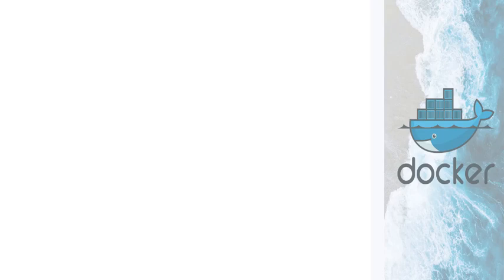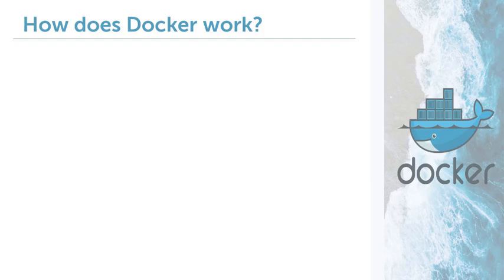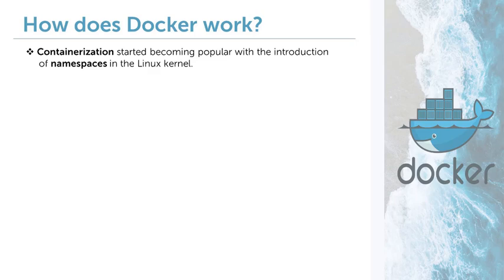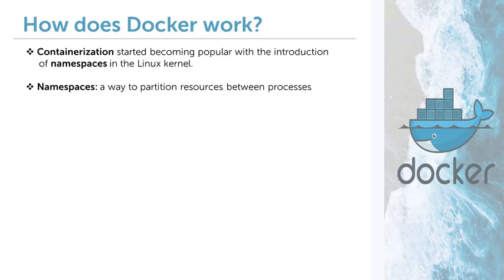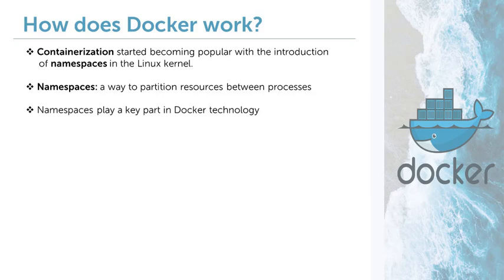Now let's take a look at containerization. The idea of containerization started becoming popular with the introduction of namespaces in the Linux kernel. Basically, what namespaces allow you to do is partition your hardware resources into multiple namespaces. You can then assign certain processes to those namespaces, and they will only be able to use the resources in that partition. They will not be able to see processes from other partitions — they just live in their small, confined world and work with what they have. Docker uses this feature of the Linux kernel to separate containers from each other and provide each one with the resources it needs to run without interfering with other containers running on the machine.